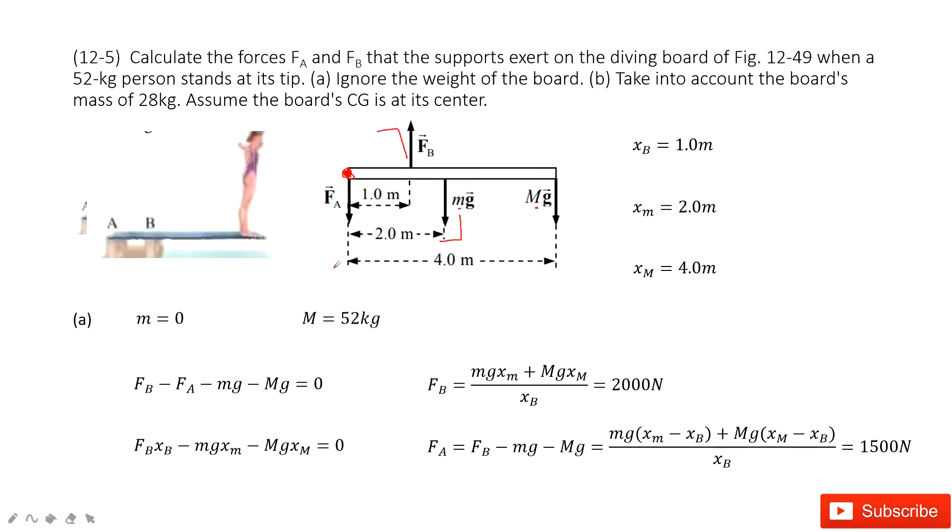So we can take FB times XB minus Mg times XM minus capital Mg times XM equal to zero. So with these two equations, you get the function for FA and FB, and then input the known quantities.